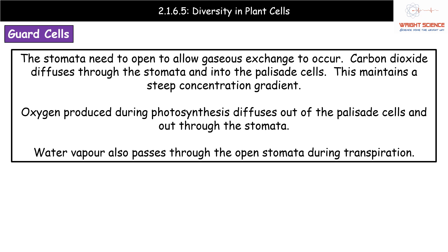Oxygen produced during photosynthesis diffuses out of the palisade cells through the stomata to the surroundings. The other substance we need to consider moving through the stomata is water vapor, in the process of transpiration.